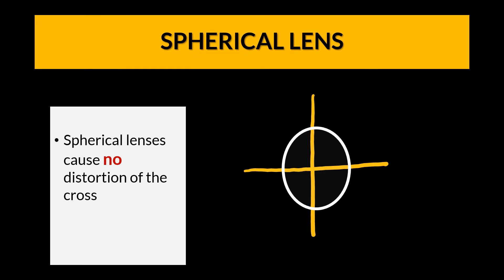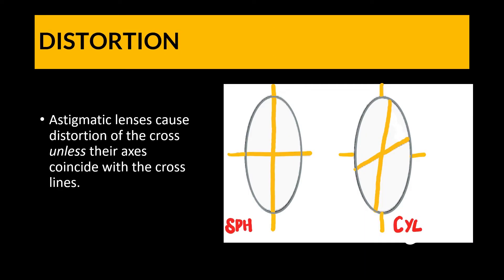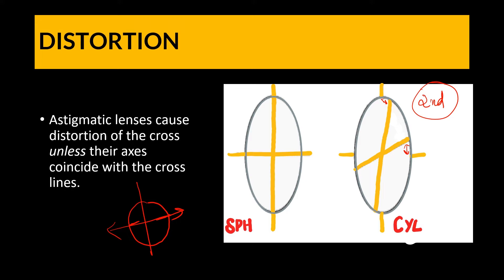A spherical lens has equal power in all meridians, so when you look at a cross through a spherical lens, there will be no distortion. If you see any distortion of the cross after placing the lens — where the cross appears broken — that is called distortion and it happens with astigmatic lenses. However, if the axis of the cylindrical lens is aligned with the cross, you will not see any distortion, so that is an important point to remember.